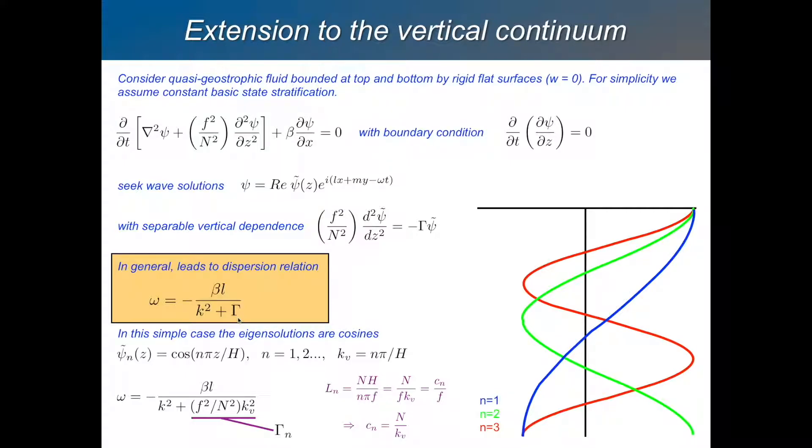So for each different mode, for each different vertical structure, we have a different Rossby wave with different properties. So it'll have a different phase speed, for example, depending on this thing, gamma, which gamma is related to the vertical wave number.